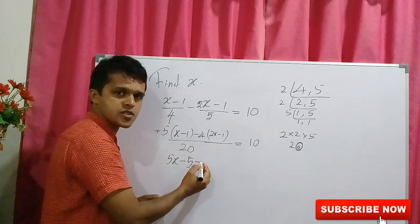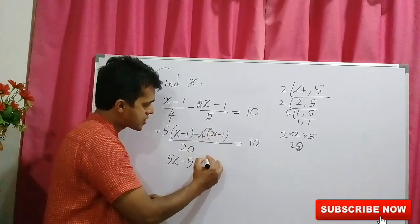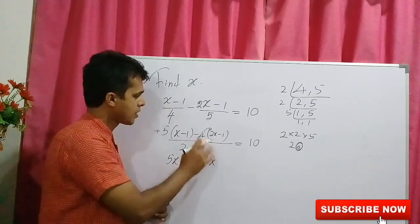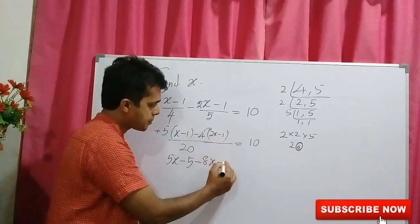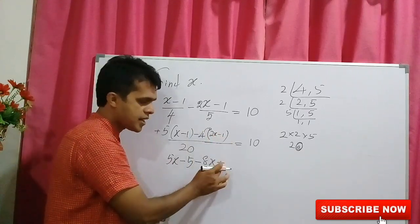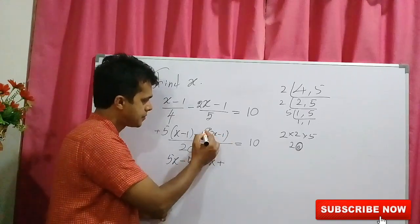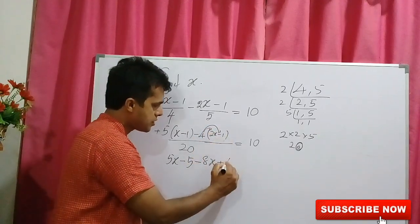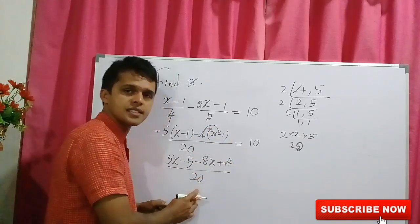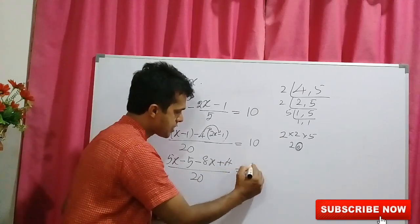Minus times plus is minus. 4 times 2x is 8x. Minus times minus is plus. 4 times 1 is 4. Minus times 5 over 20 equals to 10.